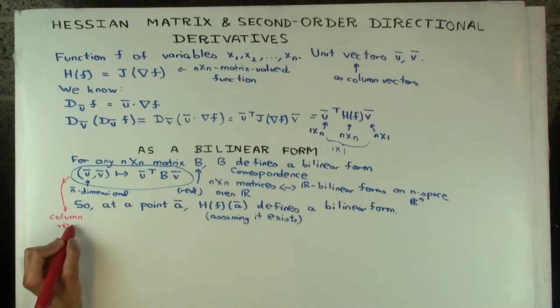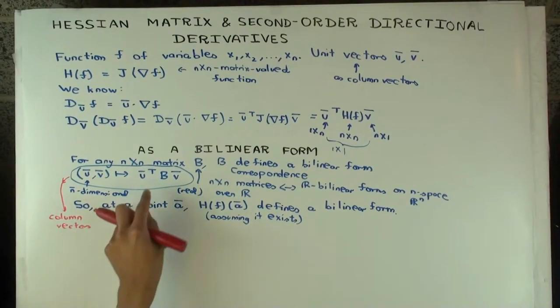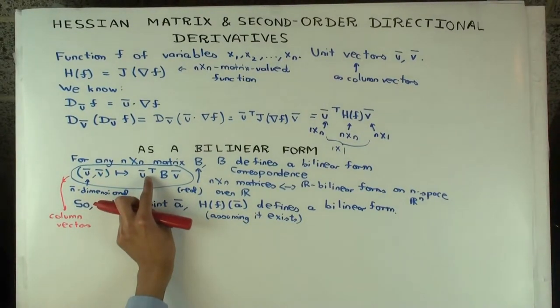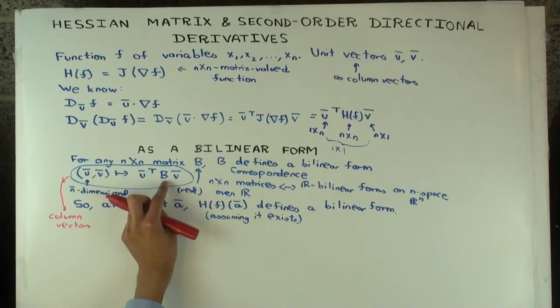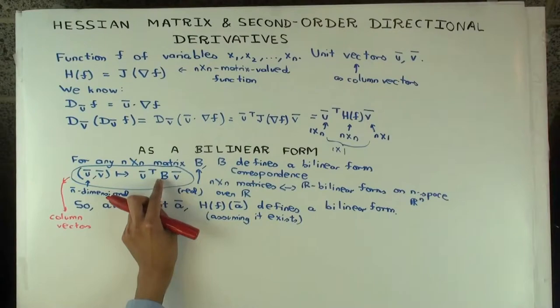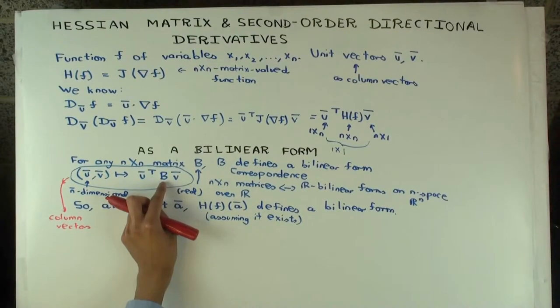So U and V are treating as column vectors. I'm thinking of them as column vectors. So I'm multiplying U transpose, which is a row vector, 1 cross n, by B, which is a n cross n square matrix, by V, which is a n cross 1 column vector. When I multiply all three, I get a one cross 1 matrix, and that's just a number.